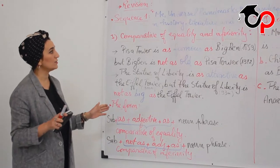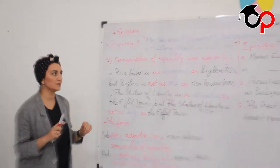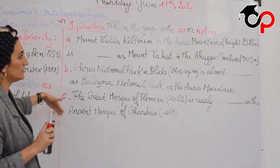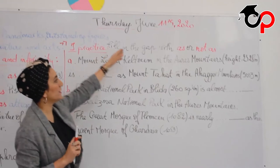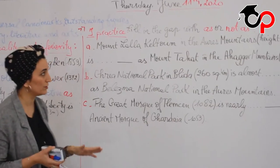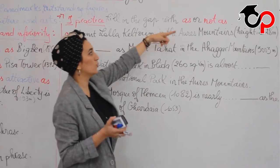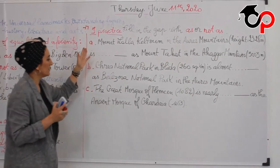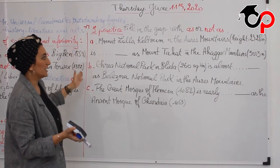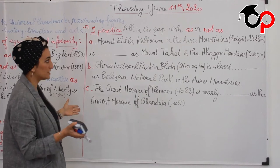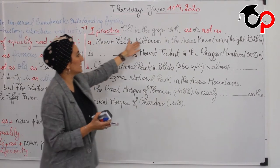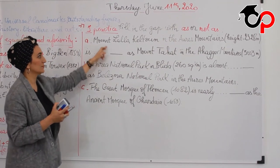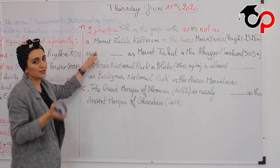Now let's move to practice with some examples. Task one: fill the gap with 'as' or 'not as,' meaning fill with equality or inferiority. These are some outstanding places in Algeria — famous places to visit. For the first sentence, comparing Mount Tahat and the Anagar mountains, you have to put either 'as' or 'not as.'